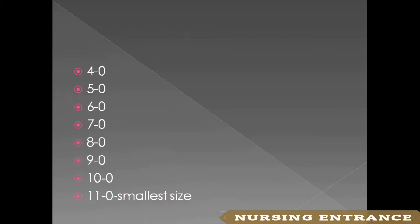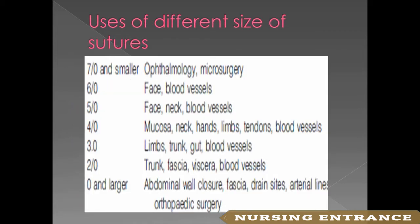Sizes range from 4-0, 5-0, 6-0, 7-0, 8-0, 9-0, 10-0, up to 11-0 as the smallest. Clinical uses: 7-0 and smaller — ophthalmology and microsurgery; 6-0 — face or blood vessels; 5-0 — face and neck; 4-0 — mucosa, neck, hands, limbs, tendons, blood vessels; 3-0 — limbs, trunk, gut, blood vessels; 2-0 — trunk, fascia, viscera, blood vessels; 0 and larger — abdominal wall closure, fascia, drain sites, arterial lines, orthopedic surgery.